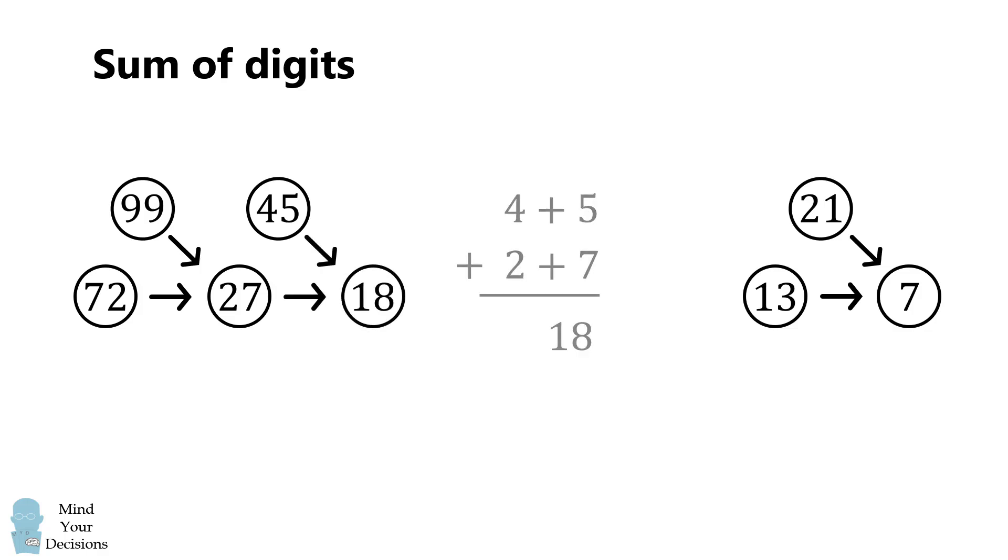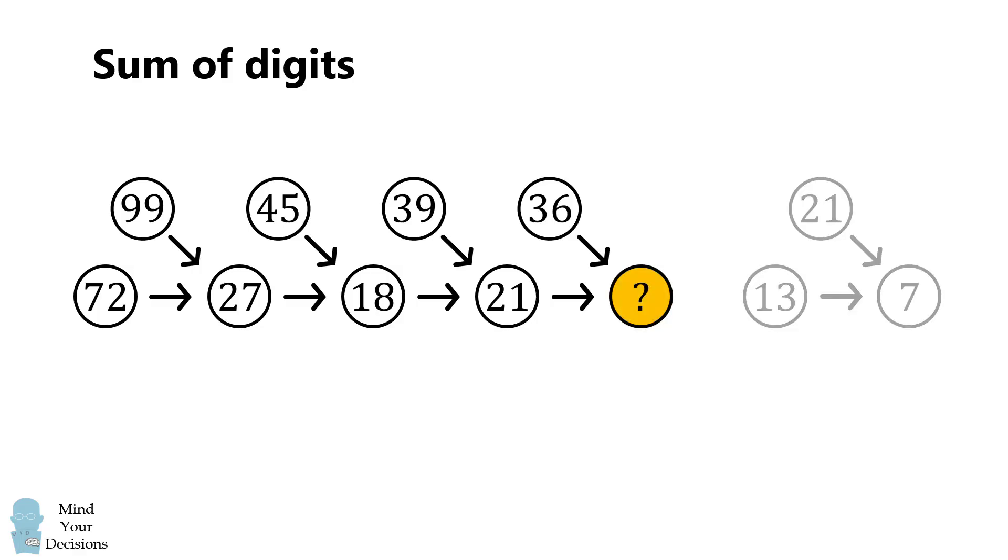So it works in the next case. We can see this rule works for all of the data that is provided in the puzzle. 39 and 18 will have a sum of digits equal to 21. So then we would have 36 and 21. If we add up the digits in these two numbers, we will get 3 plus 6 plus 2 plus 1, and that's equal to 12.